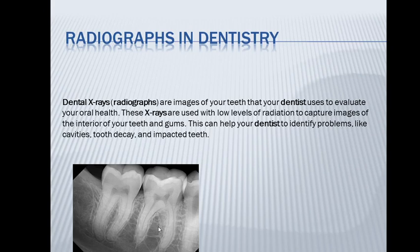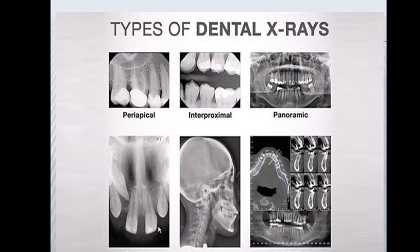These are the types of dental x-rays we're going to discuss: periapical radiographs, interproximal or bitewing radiographs used for detection of interproximal caries, panoramic radiographs used for detection of abnormalities or a submerged lower molar, occlusal radiographs, cephalometric radiographs, and CBCT.